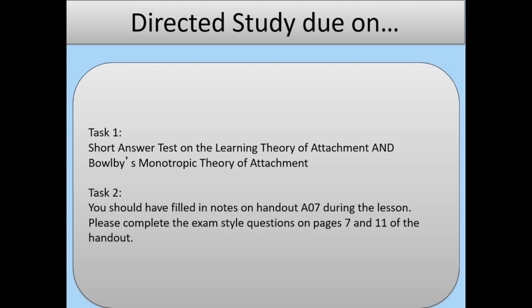A final evaluation would be to use the opposite theory — Bowlby's monotropic theory — which we will look at in the next video. You can't really use it as an evaluation point until you know what Bowlby's monotropic theory is. If you are one of my students, you'll have a short answer test on both the learning theory of attachment and Bowlby's monotropic theory, and you need to complete pages one to seven of handout AO7. Page seven contains two exam-style questions, which are really important, so make notes in the other sections for good revision material.